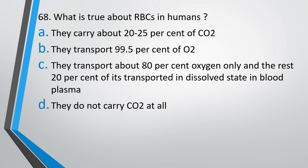Question number 68: What is true about RBC in humans? (A) They carry about 20–25% of carbon dioxide. (B) They transport 99.5% of oxygen. (C) They transport 80% of oxygen only, and the rest 20% is transported in dissolved state in blood plasma. (D) They do not carry carbon dioxide at all. The correct answer is Option A — RBCs carry about 20–25% of carbon dioxide.